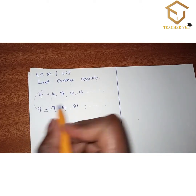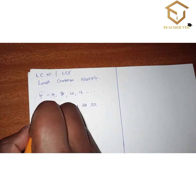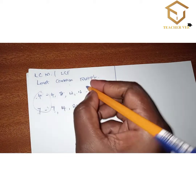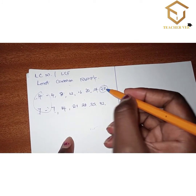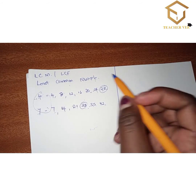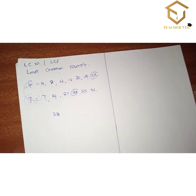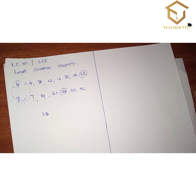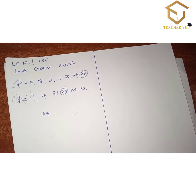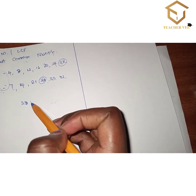Continuing with 7: 7×4=28, 7×5=35, 7×6=42. And for 4: 4×5=20, 4×6=24, 4×7=28. So 28 is a multiple of both 4 and 7. When looking for the least common multiple, you look for the smallest such multiple — you go until you get 1 in the division table. The least common multiple of 4 and 7 is 28.